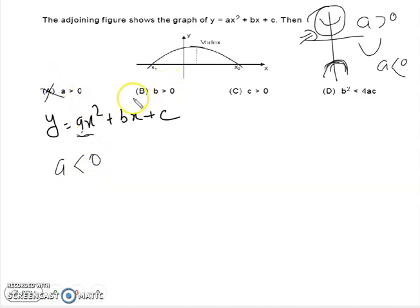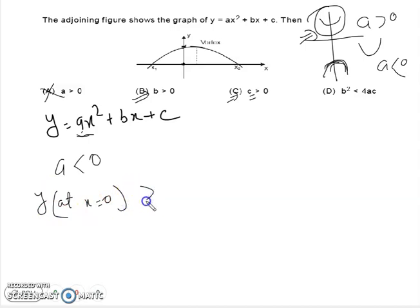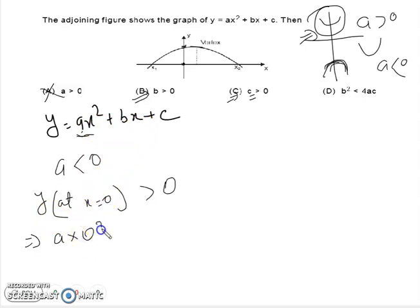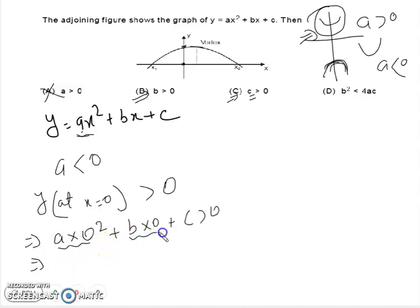Before solving for b, we need to find c. At x = 0, we get a positive y value, so y at x = 0 is greater than 0. Substituting x = 0 into y = ax² + bx + c gives us a(0)² + b(0) + c > 0, which simplifies to c > 0. So option c is the correct answer.